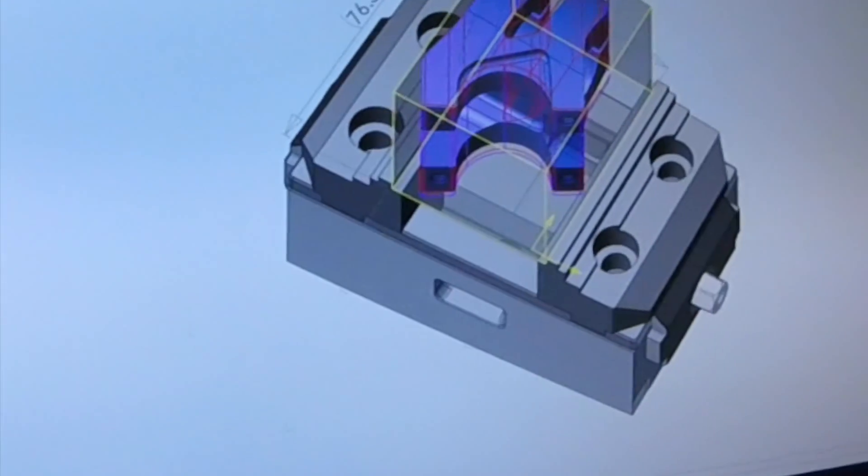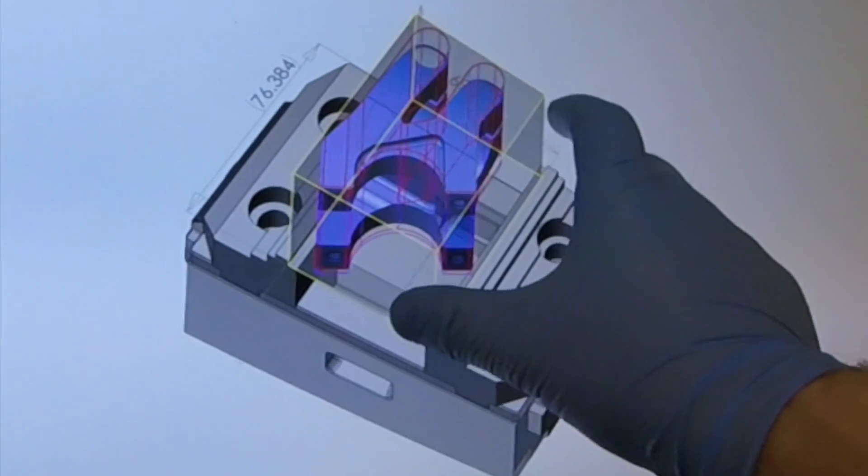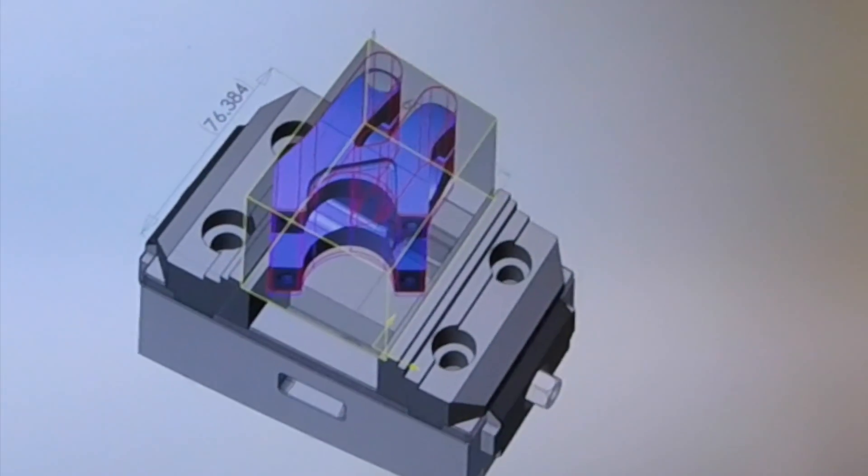Here we are at the CAD CAM stage. We bring in a model of our vise, we bring in a model of our stock and the part we are going to make.